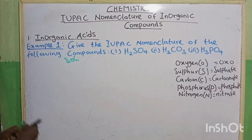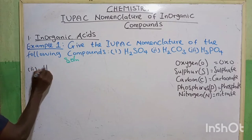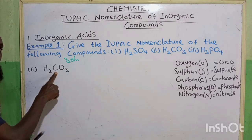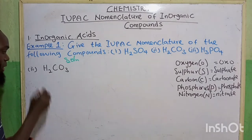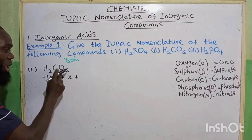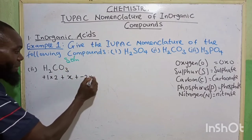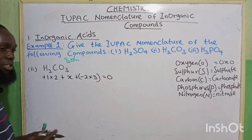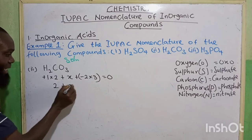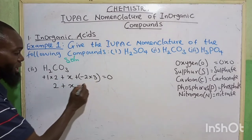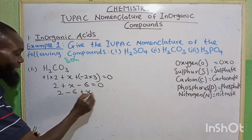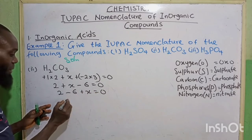The second one, we have H₂CO₃. We have to find the oxidation state of the central element, which is carbon. The valency of hydrogen is plus 1, multiplied by 2, plus carbon (X), plus oxygen minus 2, multiplied by 3, equals 0. So 1 times 2 gives 2, plus X, plus minus 2 times 3 gives minus 6, equals 0. Collecting like terms: 2 minus 6 plus X equals 0, giving minus 4 plus X equals 0.